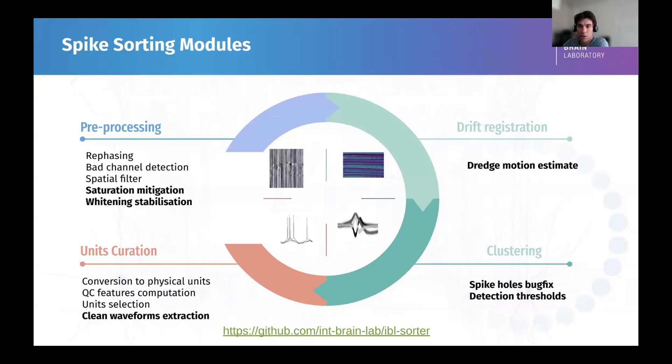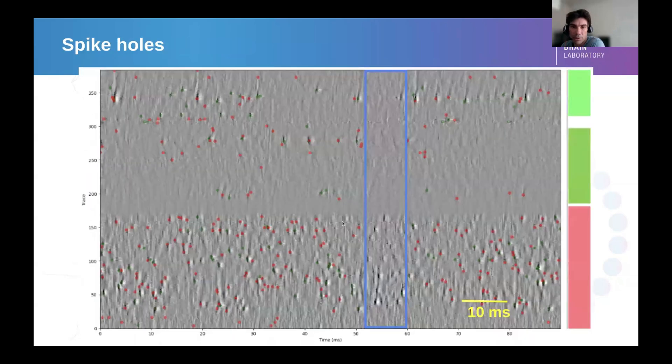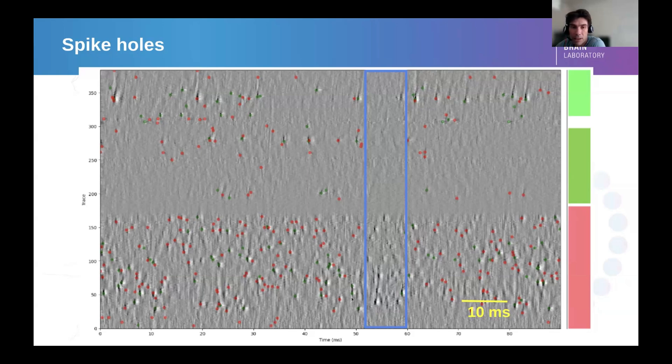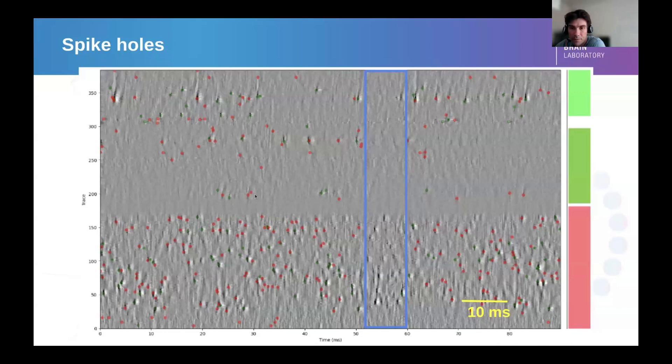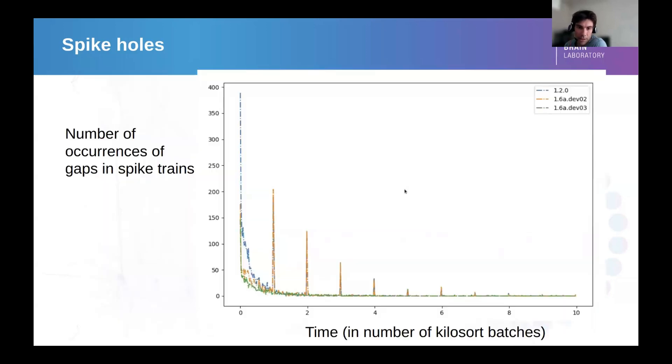I'm going to discuss a bit now clustering. So by looking at the raw data, and this is why I say it's important. Someone caught this at the IBL, but a bit later in the project, we start seeing that at regular intervals, we had a few minutes of missing data where there were no spike detection. So you can see all of the spikes are detected left and right, but not here. So when we started looking at the occurrence of those events, we tried to count the number of occurrence of those blank areas. And we saw that it was related to the batch length, to the Kilosort batch length.